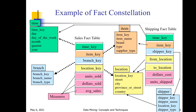In the shipping fact table, you can observe time key, item key, shipper key, from location, to location, dollars cost, and unit shipped. Dollars cost and unit shipped are the measures. The fact table is a collection of these foreign keys, dimensions, and measures.